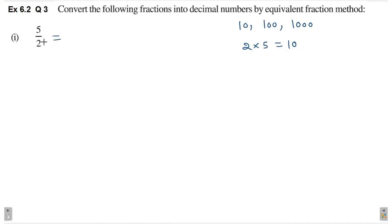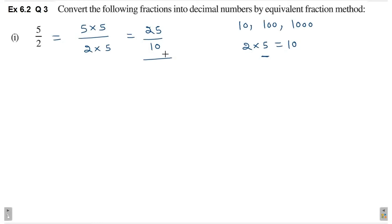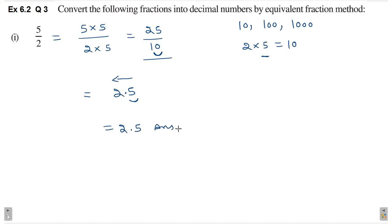So, hum kya kareenge? We will multiply both numerator and denominator by 5. So, 5 into 5 divided by 2 into 5. This is equal to 25 divided by 10. Ab humare paas ye wali jo fraction hai 25 by 10. Yahaan per denominator mein humare paas 10 hai. So, right more side se ek digit chhod ke left hand side pe lagana hai decimal. This is one digit, iske baad lagega decimal. So, this is 2.5. Isi method ko bolte hai equivalent fraction method.